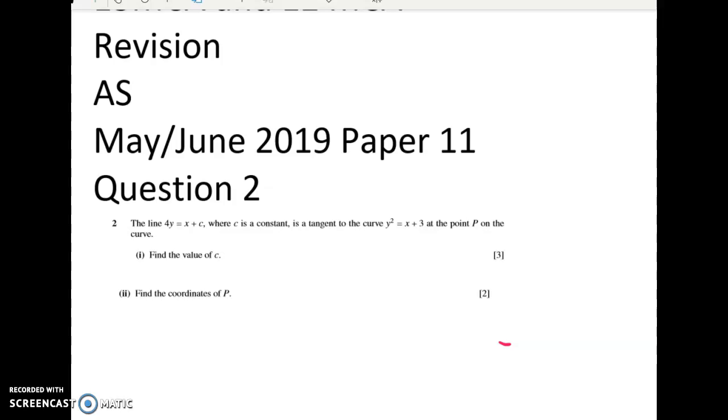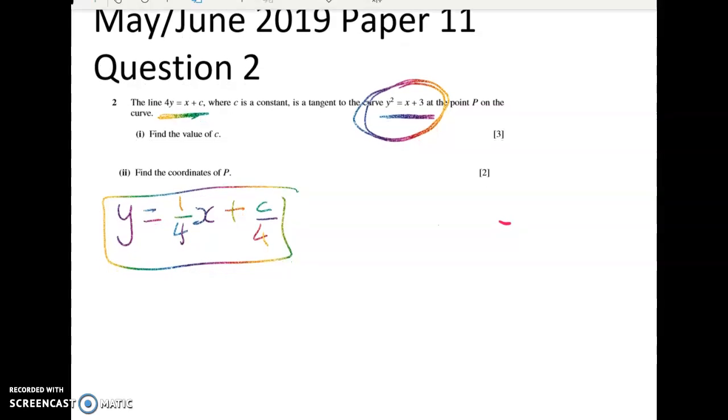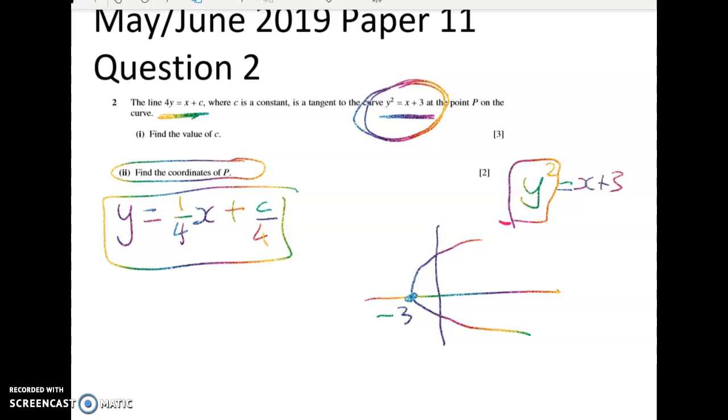So when you get a question like this, it's good to think about what's happening graphically before we jump straight into the algebra. We're given a line for y equals x plus c and it's tangent to this curve here. Now I'm going to rewrite that line in mx plus c form straight away. So y is equal to one quarter x plus c over 4. We've got a straight line and here we've got some kind of parabola but it's not an x squared parabola like it usually is, it's a tipped on its side parabola. So it's got y squared equals x plus 3 and that's a sideways parabola. When x is negative 3 that's when y is going to be equal to 0 and I'm looking for the coordinates eventually of the point where the tangent line touches that curve and you can see it's going to be somewhere out about here. So that's what this question is about.